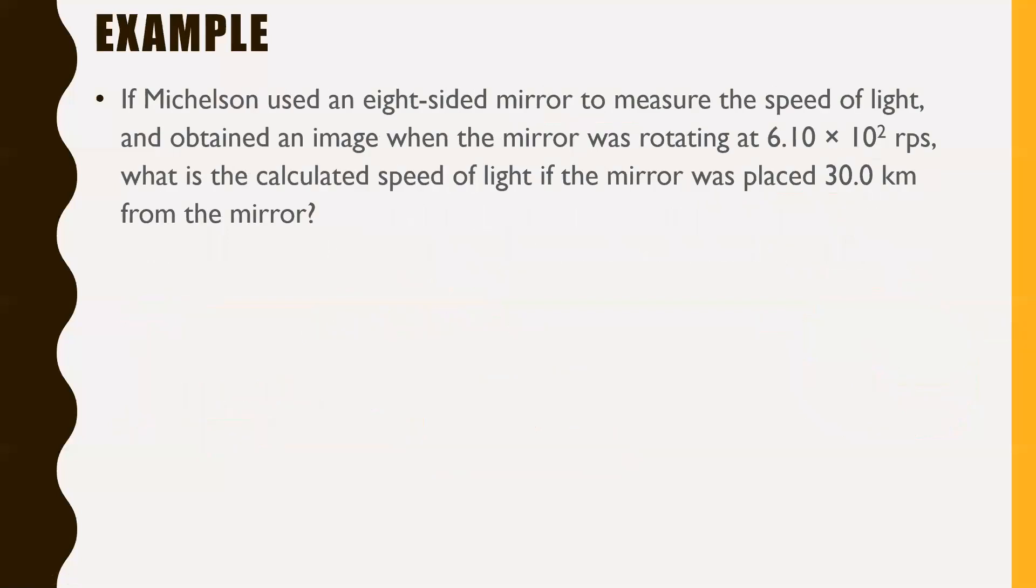Moving on, Michelson. If Michelson used an eight-sided mirror to measure the speed of light, which he did, you could change it to a six-sided mirror or a 10-sided mirror or a 12-sided mirror, whatever you want to do. But if you use an eight-sided mirror to measure the speed of light and obtain an image when the mirror was rotating at 6.10 times 10^2 rps, that's rotations per second. Remember, rotations per second, it's just another way of saying hertz. Kind of silly that they changed it around, but whatever, 10 to the power of 2 hertz there. What is the calculated speed of light if the mirror was placed 30 kilometers from the other mirror? So if the other mirror is placed 30 kilometers away from the eight-sided mirror, that's what I really should say.